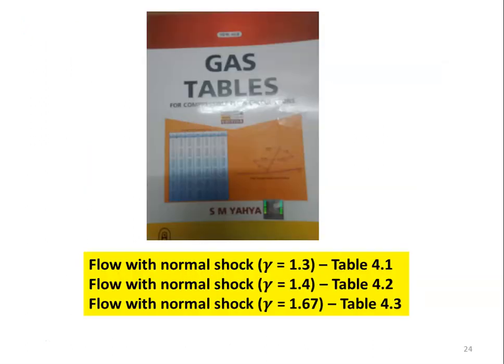This is the gas table which we will be referring for problem solving in flow with the normal shock for three different fluids with gamma equal to 1.3, gamma equal to 1.4, and gamma equal to 1.67. We refer to table number 4.1, 4.2, and 4.3. The majority of problems use gamma equal to 1.4. If the fluid is mentioned as air, we necessarily take gamma equal to 1.4.